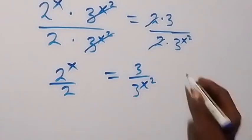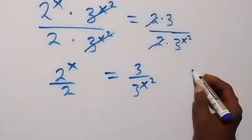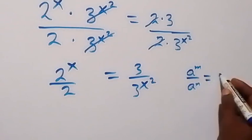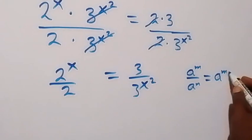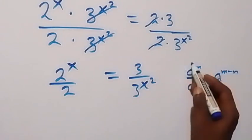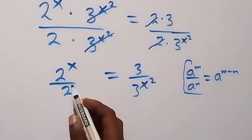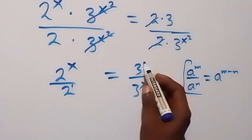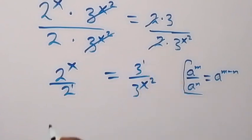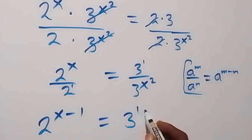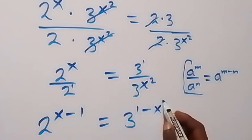From the law of indices, when we have a raised to power m over a raised to power n, this is the same as a raised to power m minus n. Let's apply this to what we have here. The power here is 1, that's 2 raised to power 1, and the power here is also 1. So this becomes 2 raised to power x minus 1, and equals 3 raised to power 1 minus x squared.